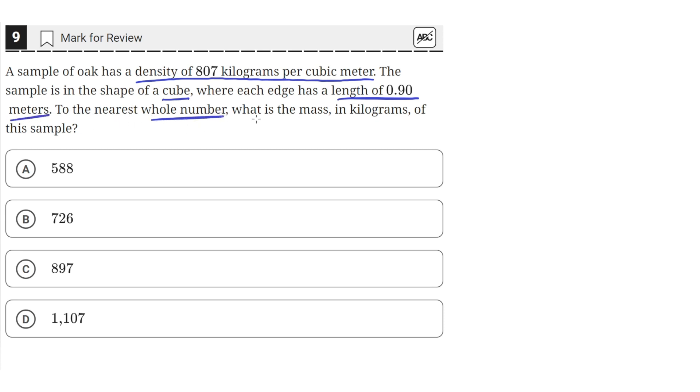To the nearest whole number, what is the mass in kilograms of the sample? So we have this cube of a sample of oak, and the length of a side on this cube is 0.9 meters.